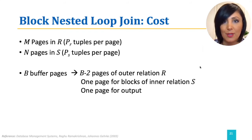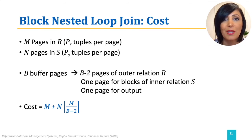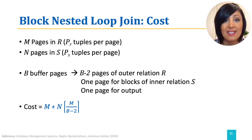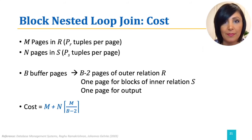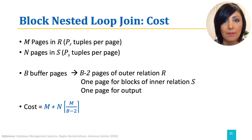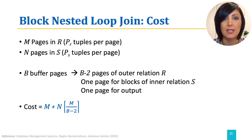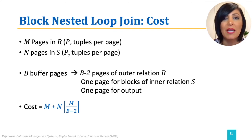The cost using these parameters is M — the cost of reading relation R — plus the cost of reading S. S is scanned a total of M divided by B minus 2 times, ignoring the memory needed for the in-memory hash table. Each scan of S involves N pages and therefore costs N. So the total cost is M plus N times M divided by B minus 2.